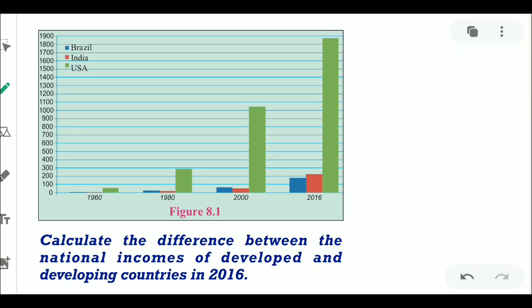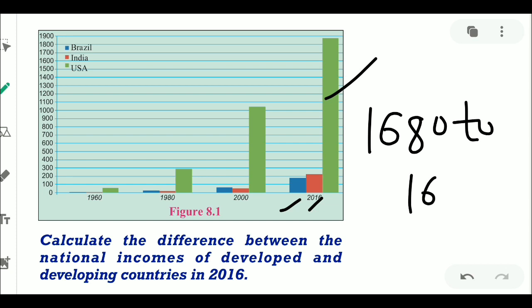What is the difference between the national incomes of developed and developing countries in 2016? Here the developed country is USA and developing countries are Brazil and India. The difference between the national incomes of developed and developing countries is found to be 1680 to 1690 million US dollars — a very large difference.